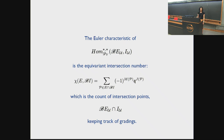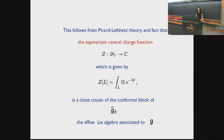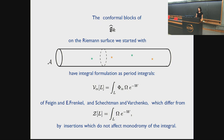The Euler characteristic you get for free — it's the equivariant intersection number, simply a count of intersection points keeping track of gradings. The fact that the Euler characteristic is the quantum link invariant is guaranteed to hold here by construction. This follows from Picard-Lefschetz theory and the fact that the equivariant central charge function — a generalization of the usual central charge function for A-branes by e^{−W} — is a close cousin of the conformal block of the affine Lie algebra associated to G. The conformal blocks have the analogous formal integral formulation as period integrals — this was discovered by Feigin and Edward Frenkel, and developed by Schechtman and Varchenko.